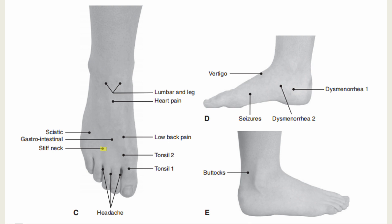The stiff neck point is located 2 units proximal to the midpoint of the line between the 3rd and 4th metatarsal bones. Indication: whiplash. The stomach and duodenal ulcer point indications include acute and chronic gastroenteritis and stomach and duodenal ulcers.